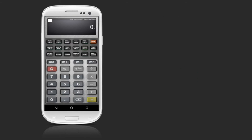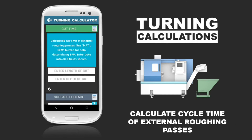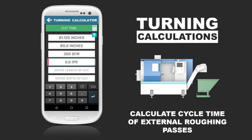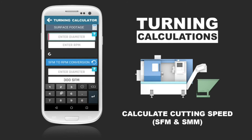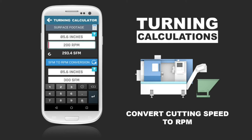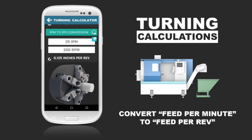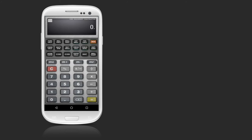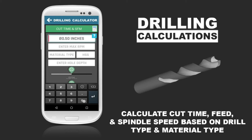Turning functions include groove and cutoff cycle time calculators, roughing cycle time calculators, turning SFM calculators, SFM to RPM conversions, IPR to IPM conversions, and IPM to IPR conversions.